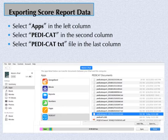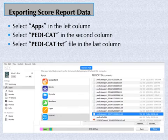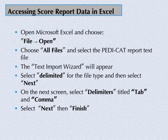Select the PDCAT text file that you would like to save. On the bottom of the screen, select Save and the location you would like to save the file to.